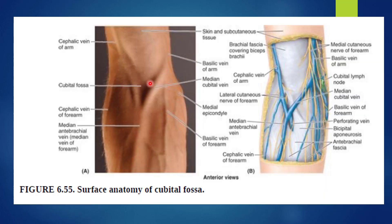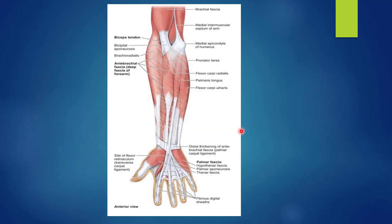Here you can see the cubital fossa with the median cubital vein, the medial epicondyle, and the lateral epicondyle in the surface anatomy. In the diagram: the medial epicondyle gives origin to the pronator teres, brachioradialis is present laterally, biceps forms the roof, and in the floor there is brachialis medially and the supinator muscle laterally.